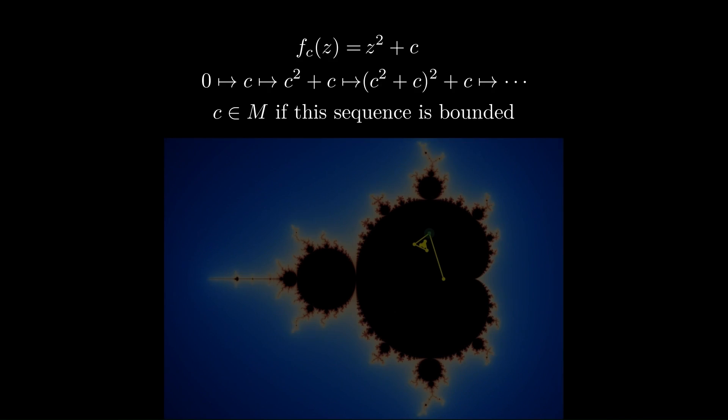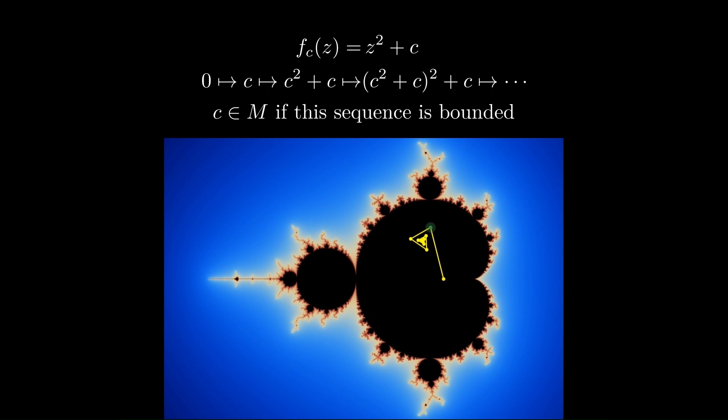This graph shows iterates of this quadratic function. So the green point is the value of c, and we're moving that around. And then starting at the origin and then moving to c, we move to c squared plus c and so on. And these points are all connected with the yellow segments. Now we can see that in this main region, which turns out to be a cardioid, the points always tend toward one limit. So they all spiral in toward a limit point.